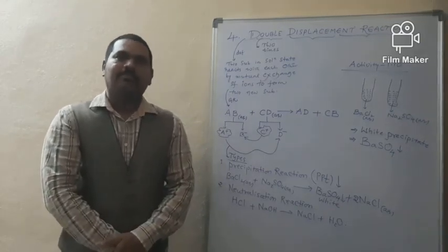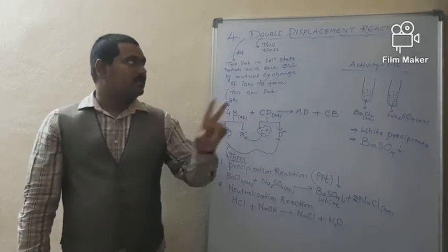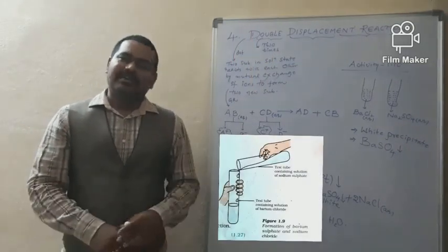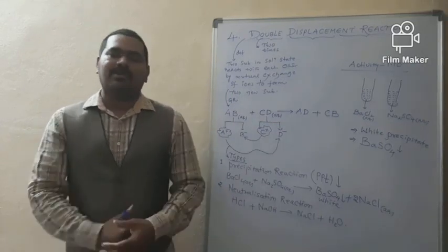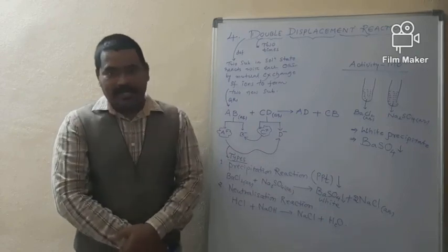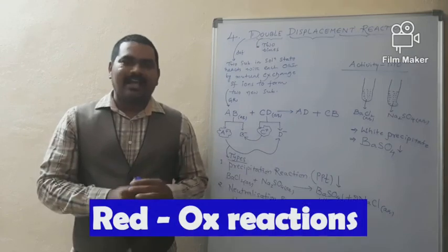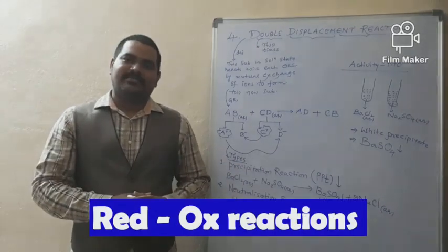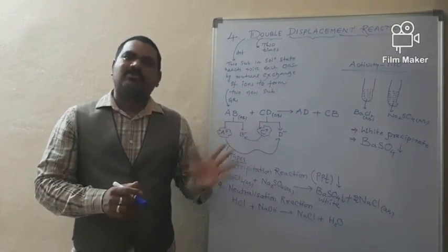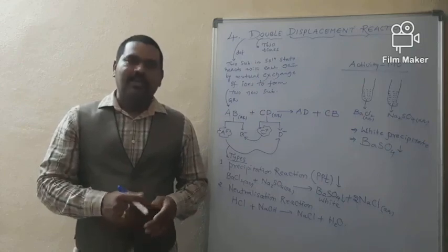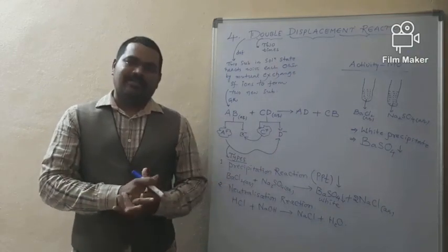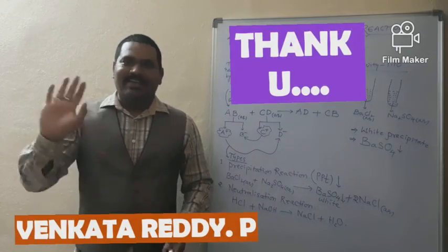That concludes today's module covering two important chemical reactions: displacement reactions and double displacement reactions. In the next module, we shall discuss the fifth type — where oxidation and reduction occur simultaneously, called redox reactions. Try to work out the definitions, general representations, various examples and activities. Have a nice day. Thank you.